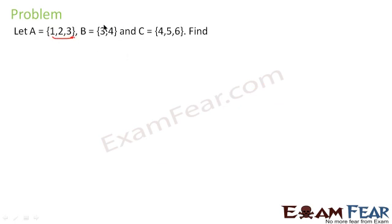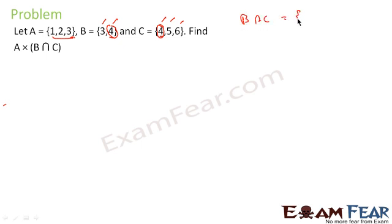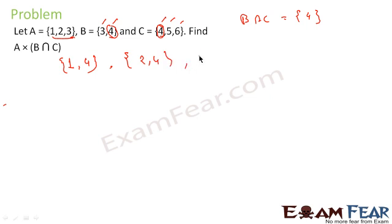Let's take one more example. Set A = {1,2,3}, set B = {3,4}, set C = {4,5,6}. We need to find A×(B∩C). First find B∩C: the common element between B and C is 4, so B∩C = {4}. Then A×(B∩C) pairs each element of A with 4: giving (1,4), (2,4), (3,4). That is our answer for A×(B∩C).